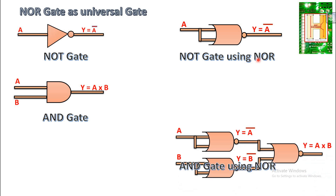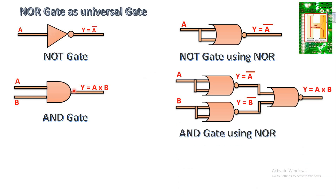Next, implementing AND using NOR. We use three NOR gates. The first NOR gate takes input A and the second takes input B, producing A complement and B complement. These are both given to the third NOR gate, giving Y equal to the complement of A complement plus B complement. By De Morgan's law and double complementation, this becomes Y equal to A into B.